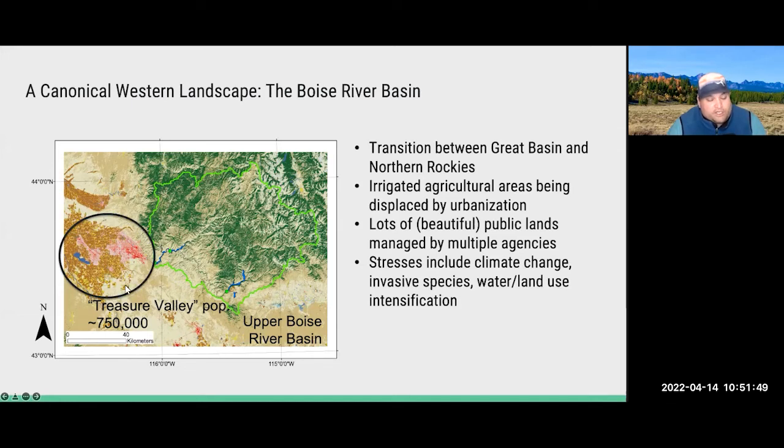But at the same time, this system is stressed as you all know. There's a lot more people that are moving into the landscape. I was just noting that when I first started using this particular figure, this approximate population was 670,000. I've now had to update this to 750,000. We have lots of stresses associated with people moving into the landscape, stresses of invasive species like cheatgrass, intensification of the land and water use, and of course changes due to climate.